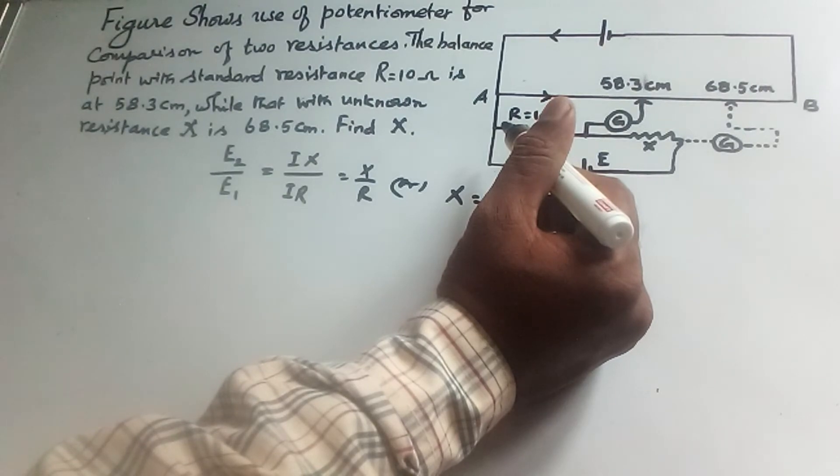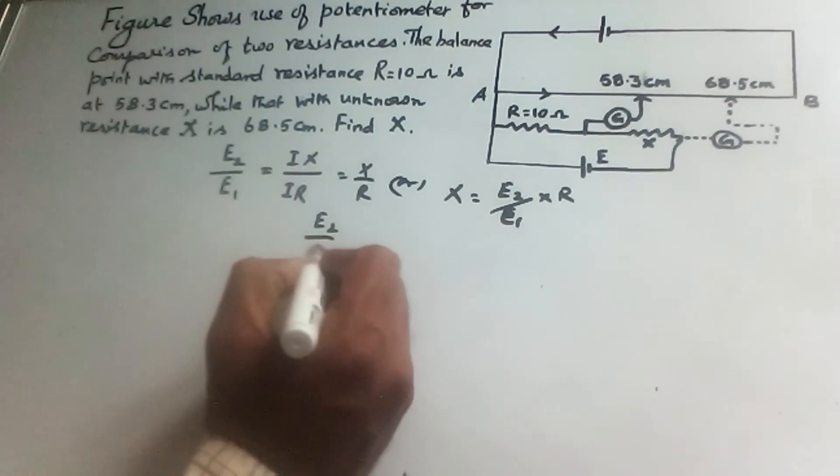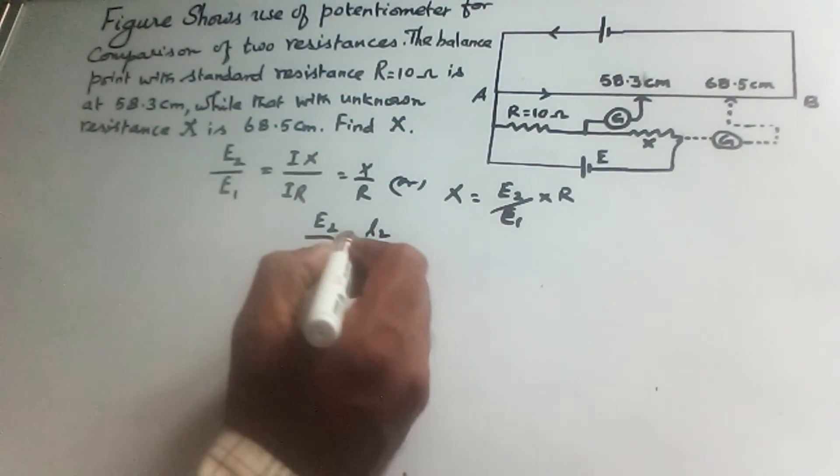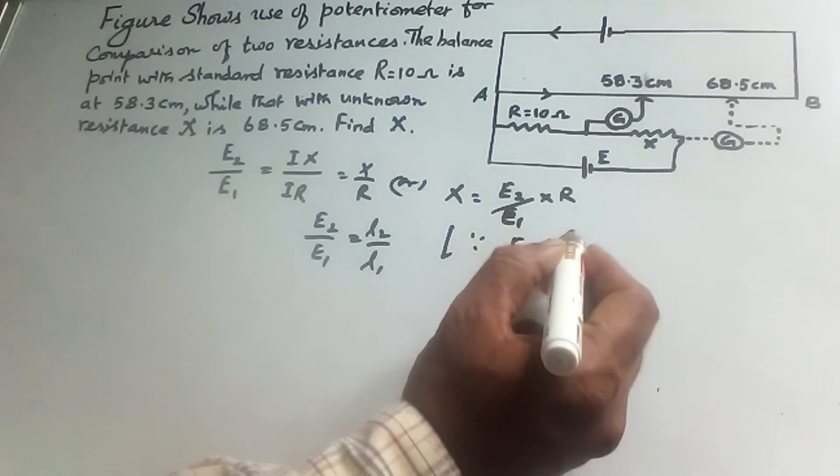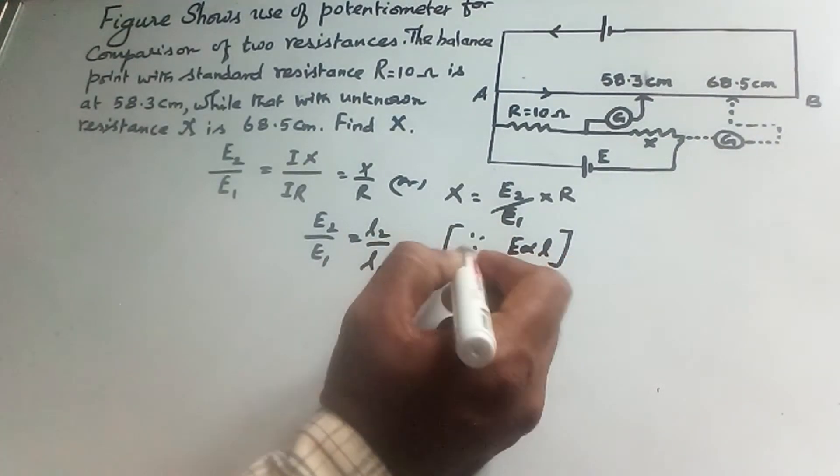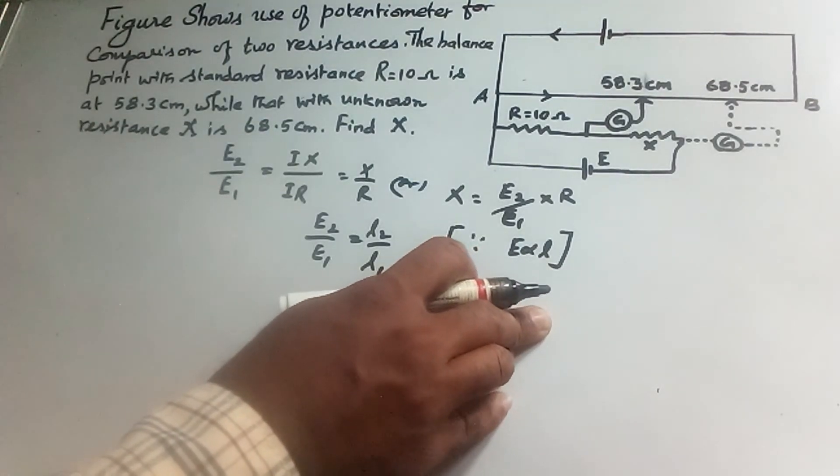e2 by e1 equal to l2 by l1, since e is directly proportional to l, that is the length.